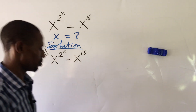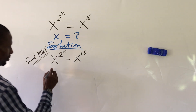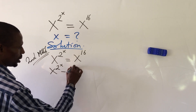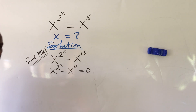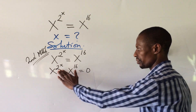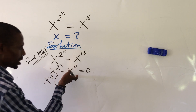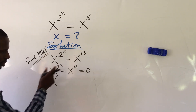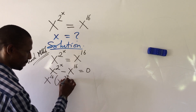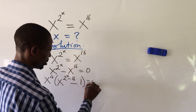Now let's look at the second method. We move x to the power of 16 to the left-hand side, giving us x to the power of (2 to the power of x) minus x to the power of 16, equal to zero. We then factor out x to the power of 16 from this expression. Dividing each term by x to the power of 16, we get x to the power of 16 times (x to the power of (2^x minus 16) minus 1) equal to zero.